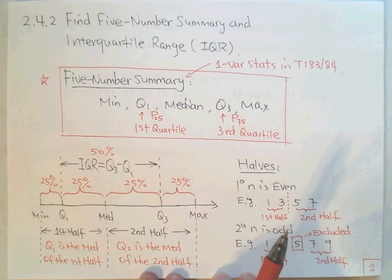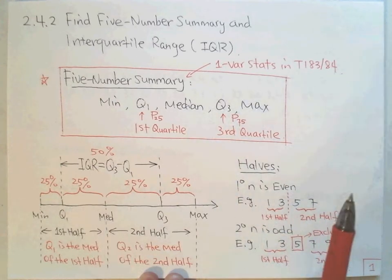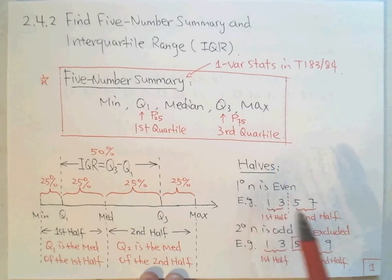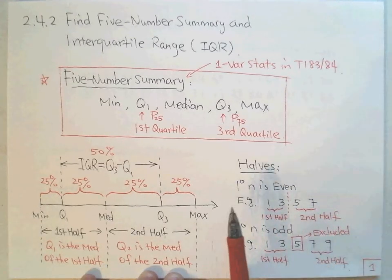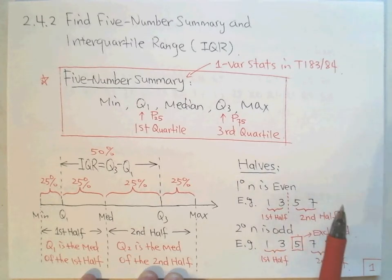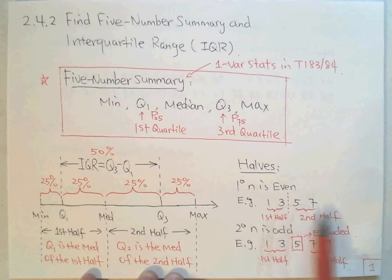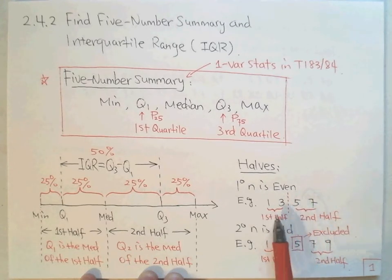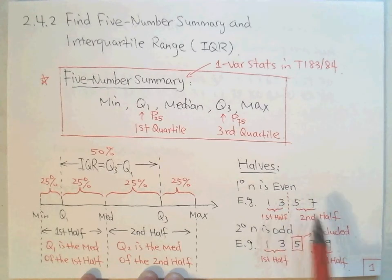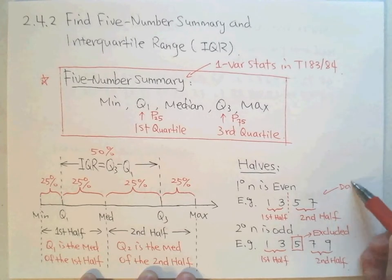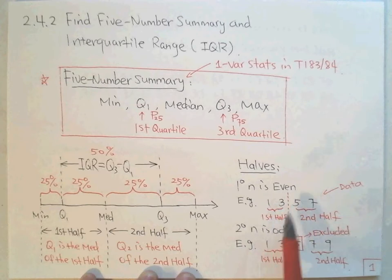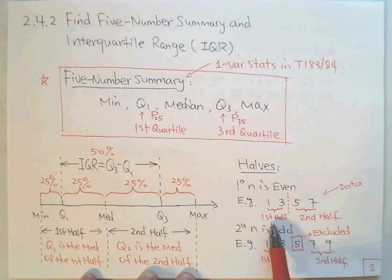One important note: we have two cases depending on the sample size n. If n is even — for example, four numbers like 1, 3, 5, 7 — you simply cut exactly in the middle. The left two values form the first half and the right two form the second half. Even n is straightforward.